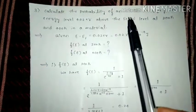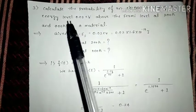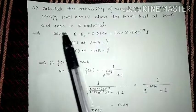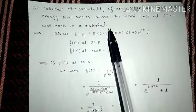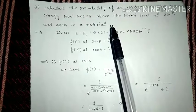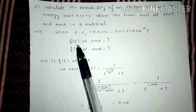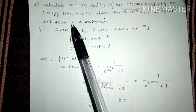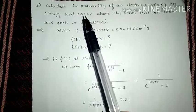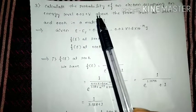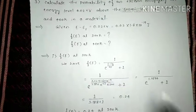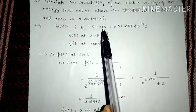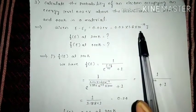The next problem: calculate the probability of an electron occupying an energy level 0.2 eV above the Fermi level at 200 K and 400 K in a material. He has asked us to find the Fermi-Dirac probability function F(E) at both temperatures. We take E − EF = 0.2 eV, which must be converted into joules.